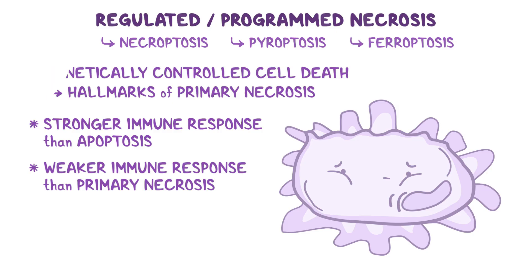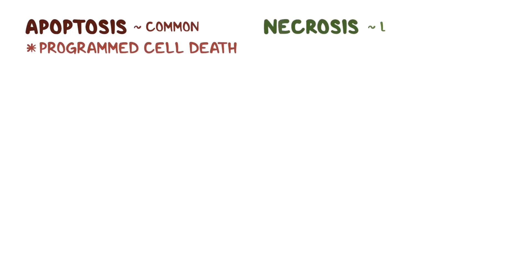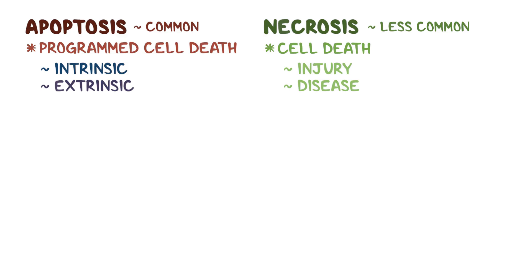All right, as a quick recap, apoptosis is a commonly occurring form of programmed cell death, whereas necrosis is a less common process where cells die due to injury or disease. Apoptosis occurs due to intrinsic and extrinsic pathways. With apoptosis, white blood cells come in and clean up the dead tissue, so this is a neat way for cells to die.